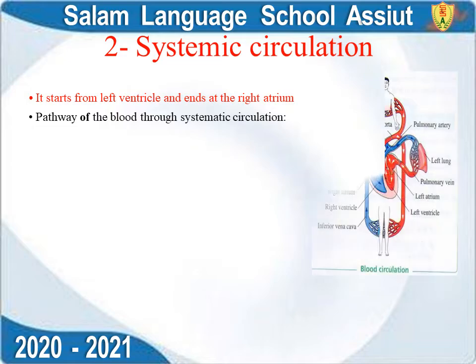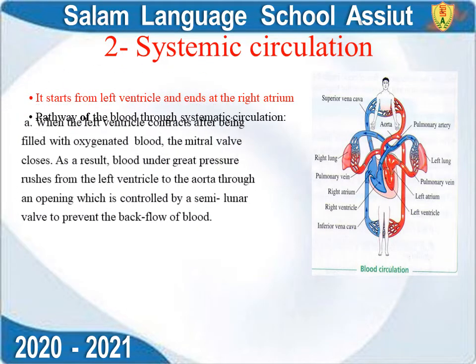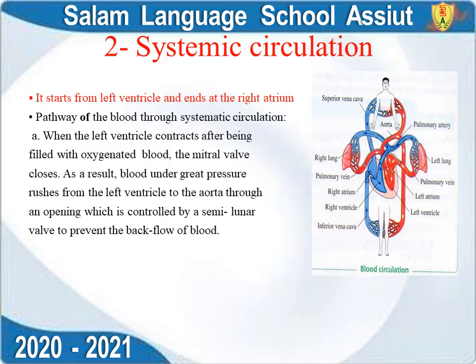Systemic circulation starts from the left ventricle and ends at the right atrium. The left side of the heart contains oxygenated blood. Oxygenated blood moves from the left atrium to the left ventricle through the mitral valve, also called the bicuspid valve. When entering the left ventricle, the mitral valve is closed.